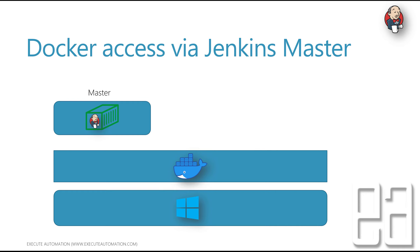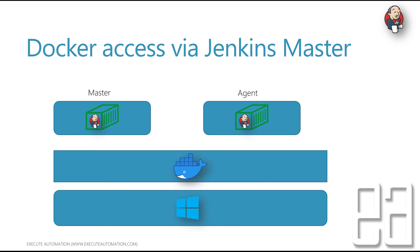We said we are going to be using a container as an agent instead of the usual agent using the slave.jar file which connects with JNLP. We're not going to use that; rather we are going to use a container as an agent. In order to do that, we actually need to somehow connect with our Docker for Windows which is running on the host machine, so that we can communicate from the master to that Docker instance.